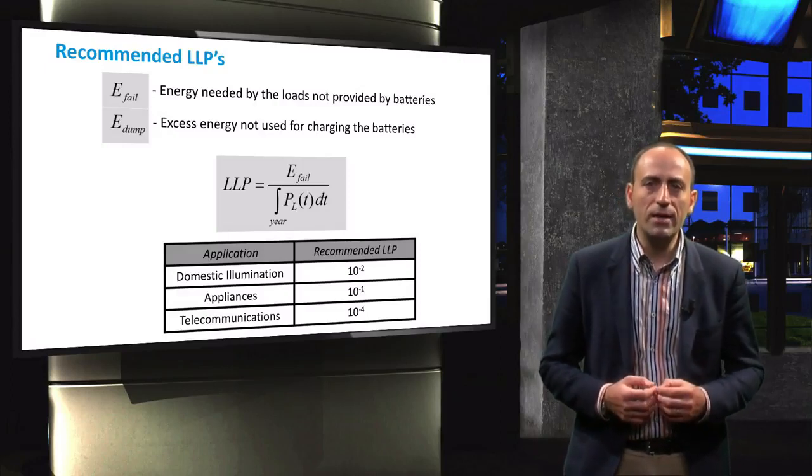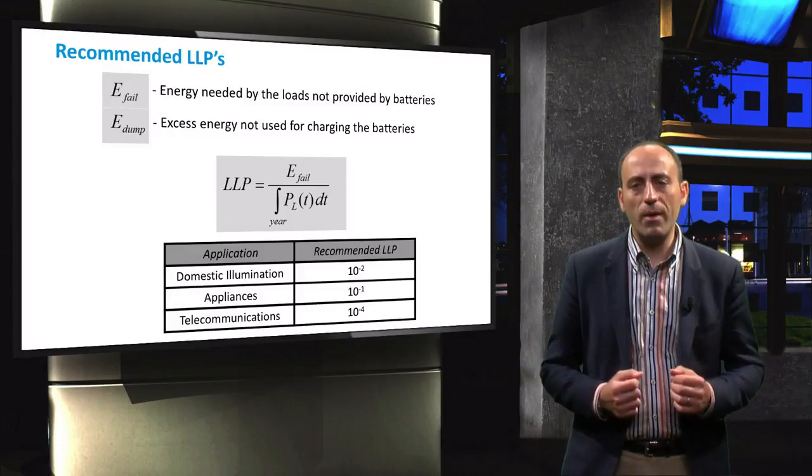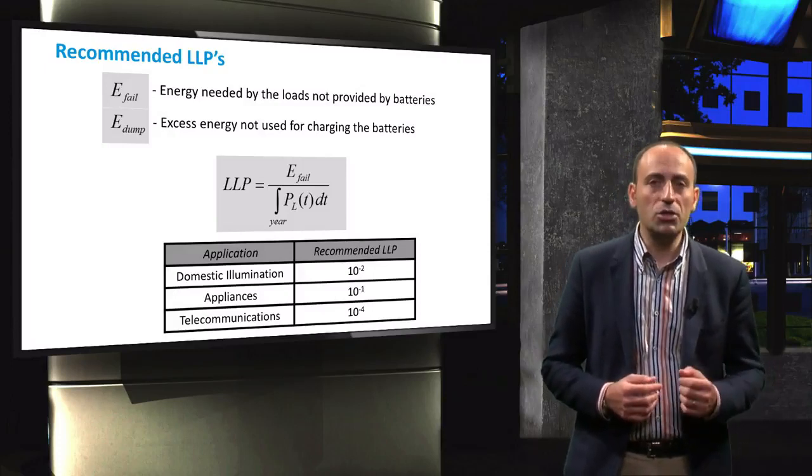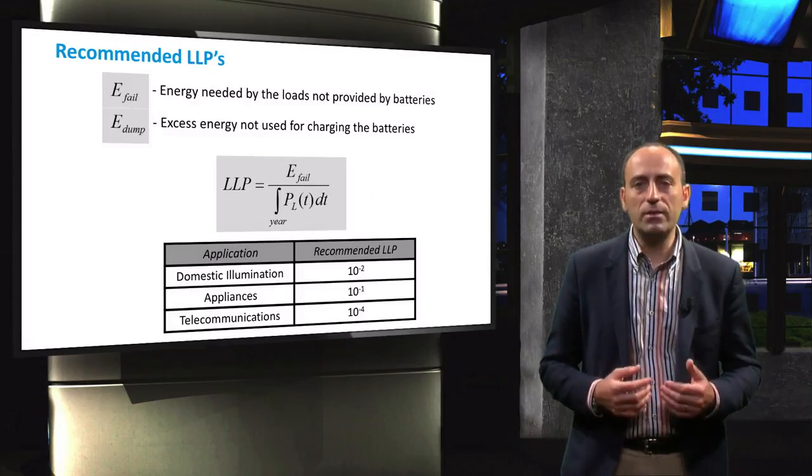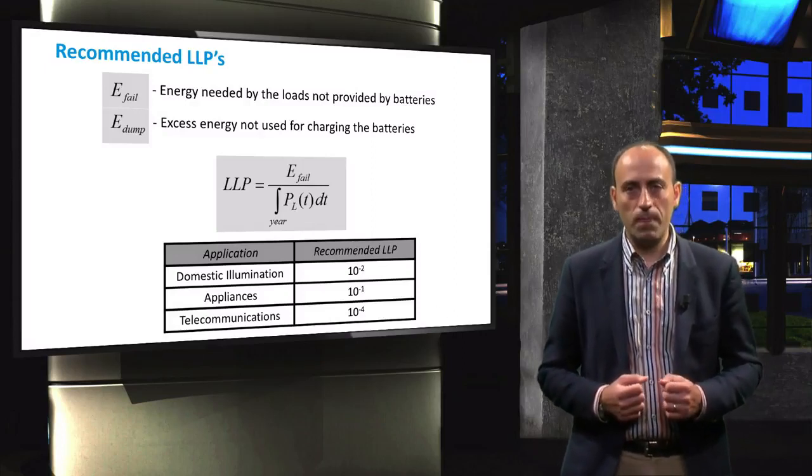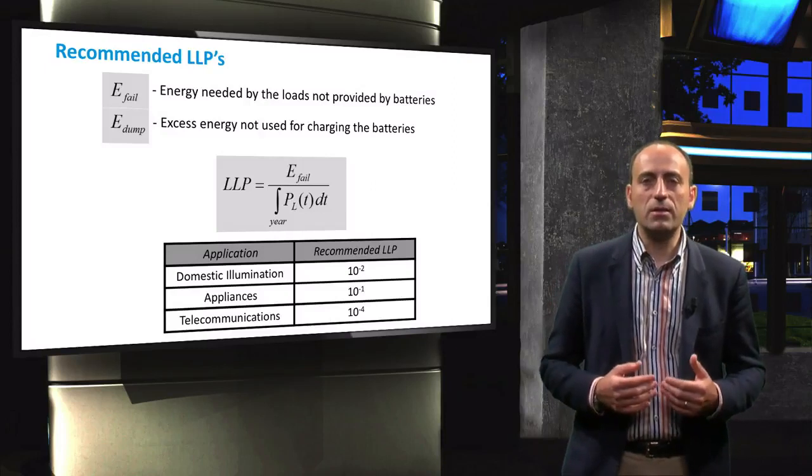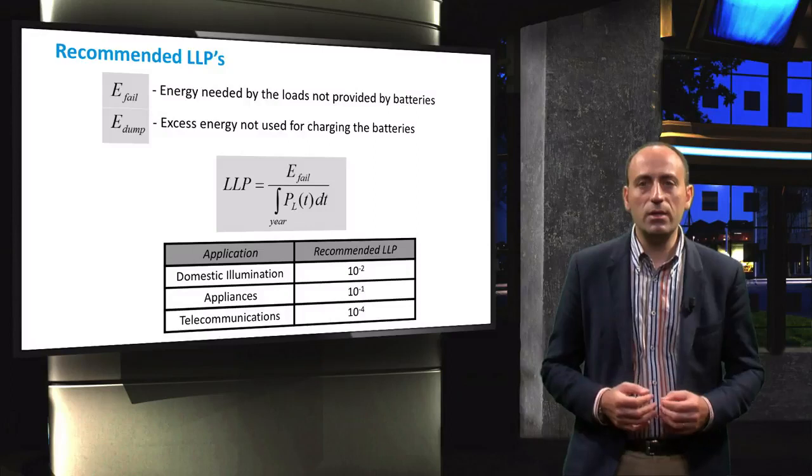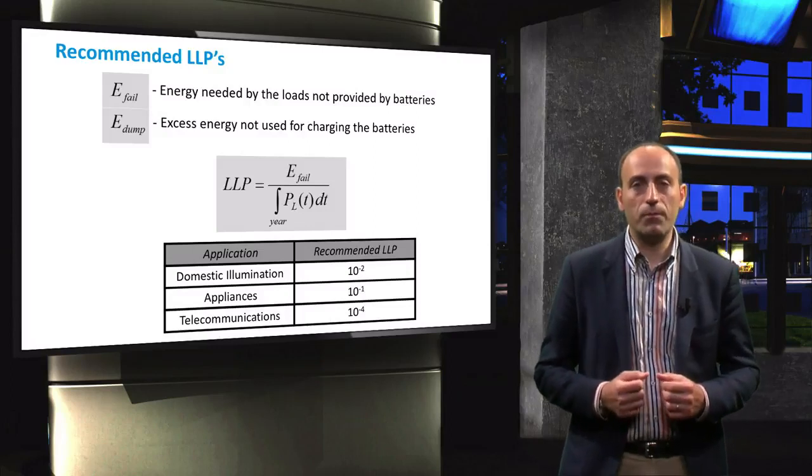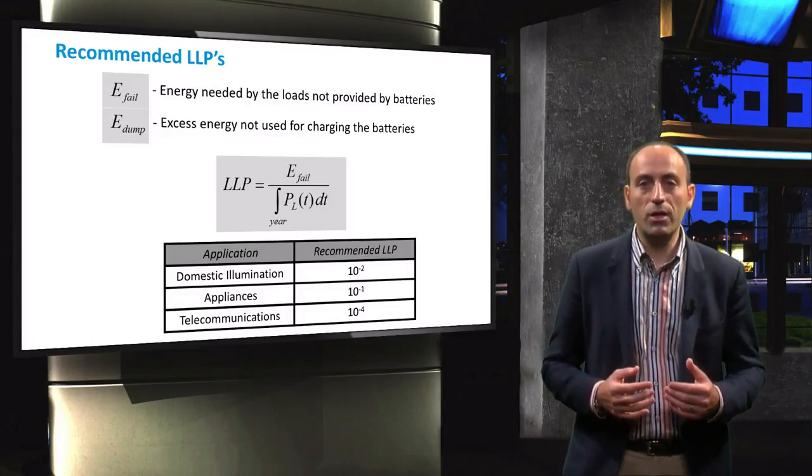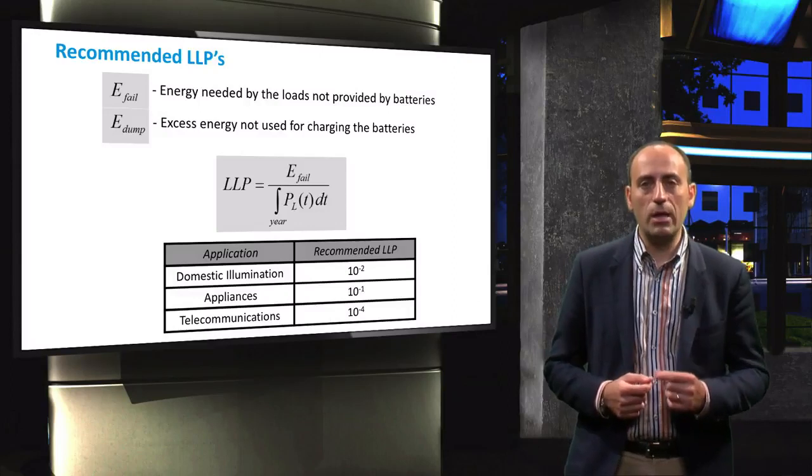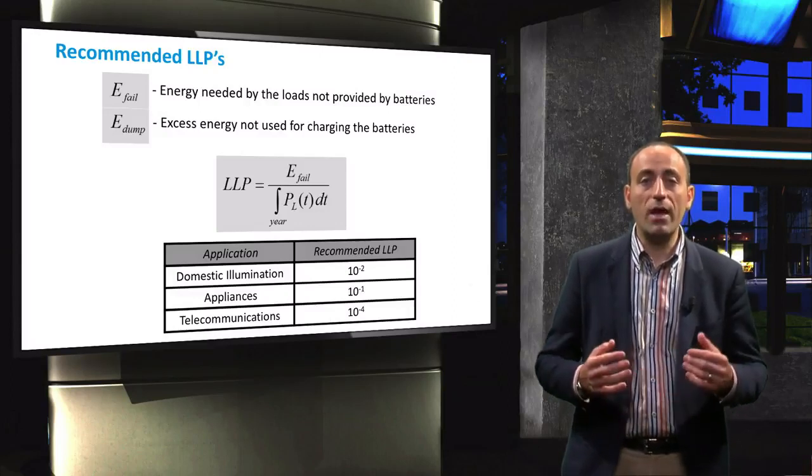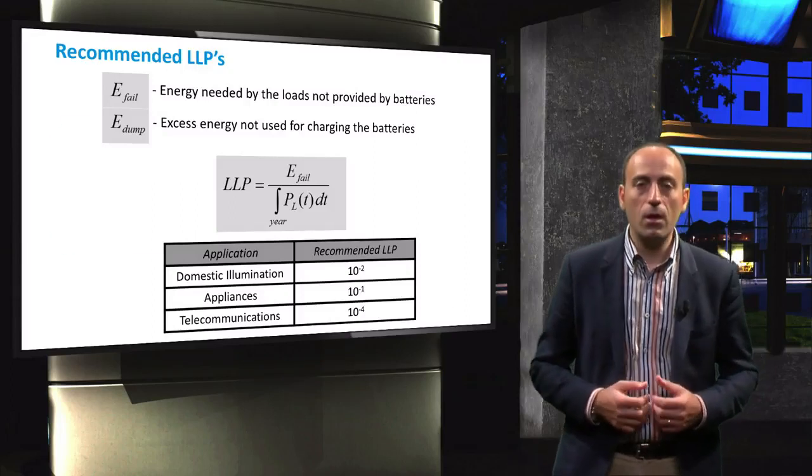This table provides typical values of recommended LLPs for different applications. For illumination, the typical recommended LLP is 10 to the power of minus 2. For appliances, it is 10 to the power of minus 1, and for telecommunication, it is 10 to the power of minus 4. You can notice that the telecommunication system has a very low LLP, where it is allowed to miss only 1 watt out of every 10,000 watts.